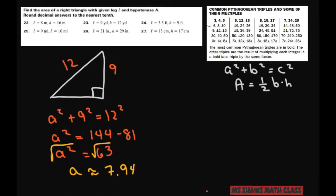So that's your x. So that's 7.94. Now let's use our formula. Area equals ½ times 7.94 times 9. So you use a calculator. And we're going to get the area is approximately 35.7 yards squared.